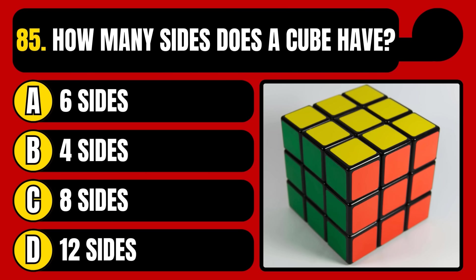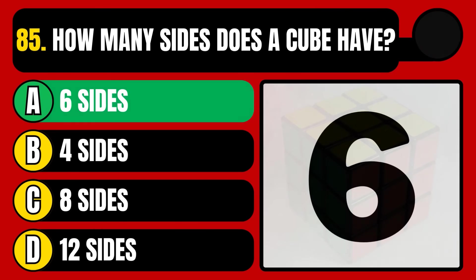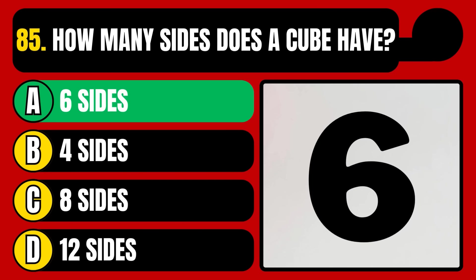How many sides does a cube have? 6 sides, 4 sides, 8 sides, or 12 sides? The correct answer is option A, 6 sides.